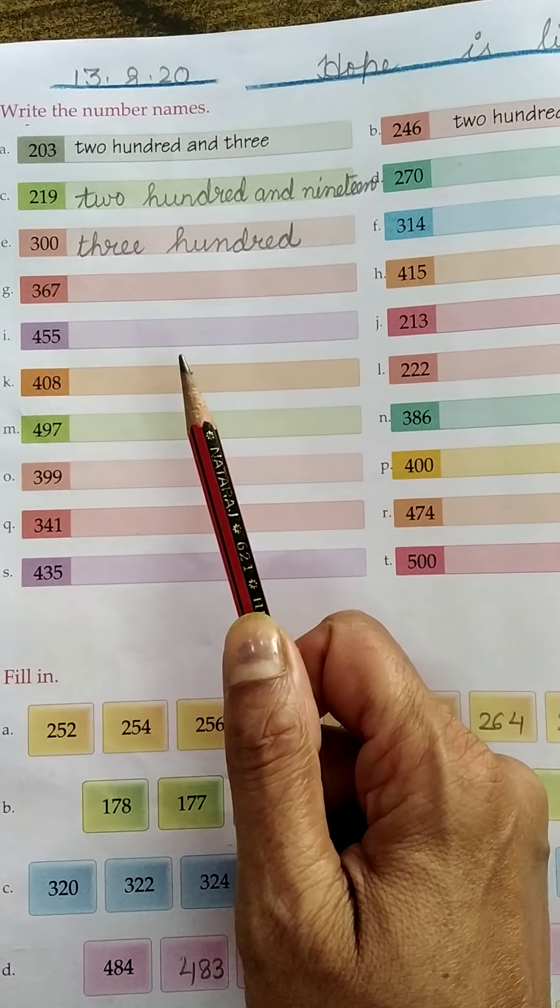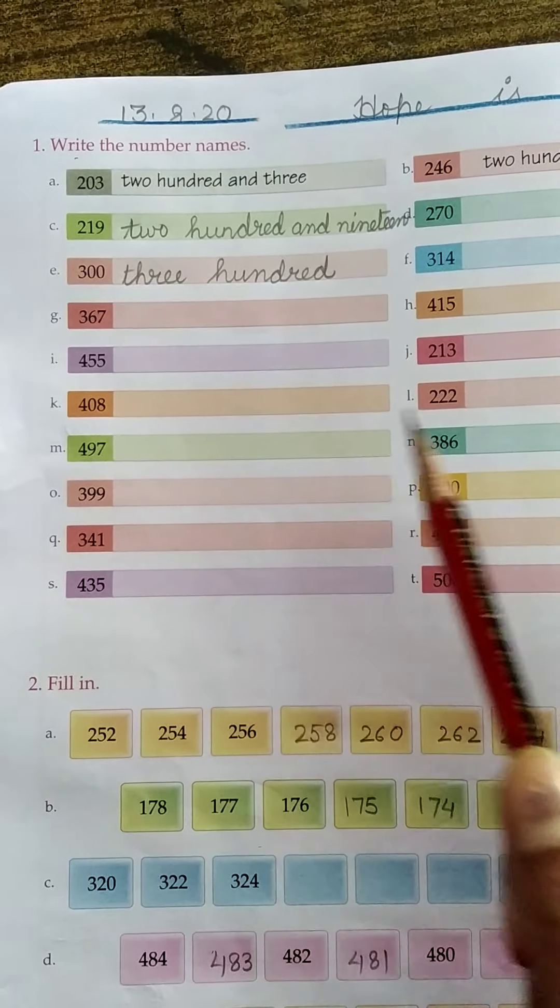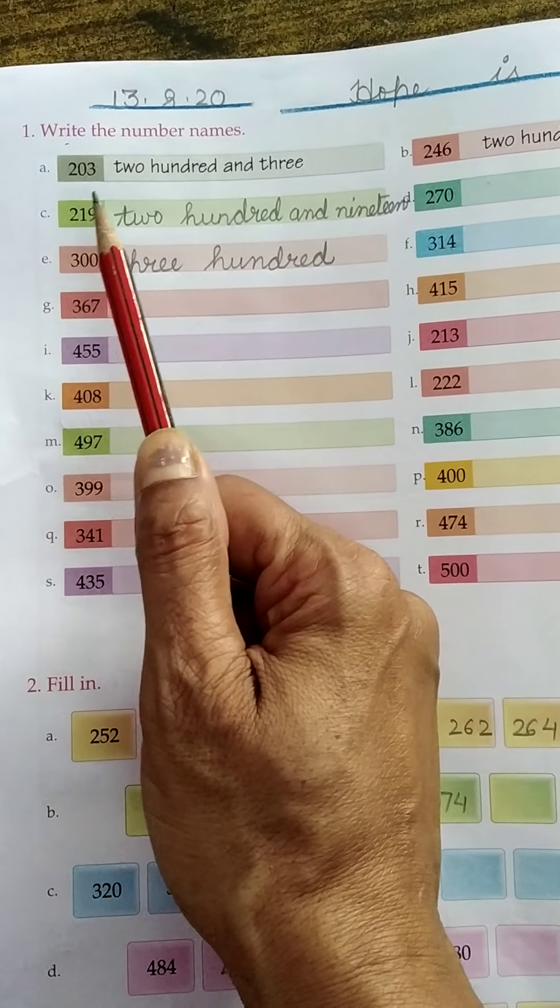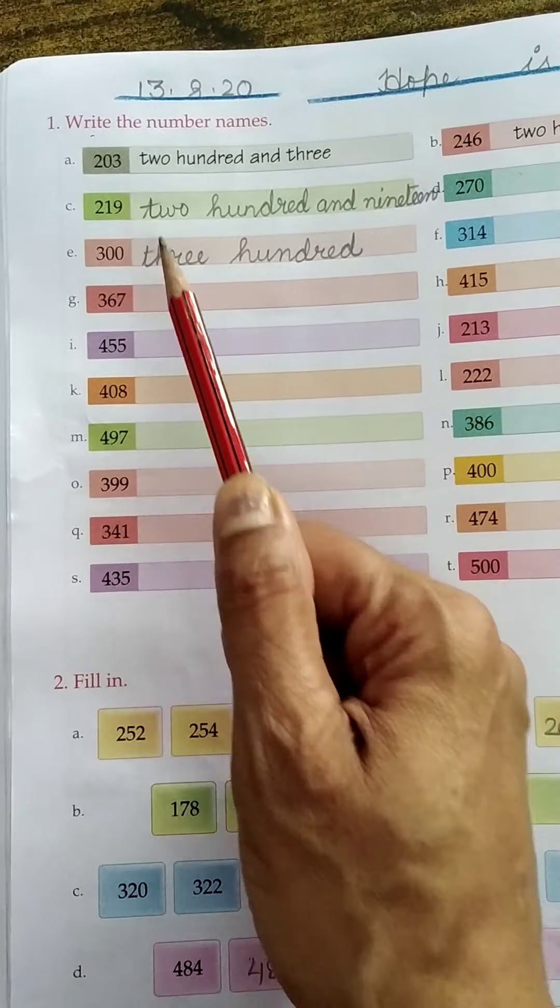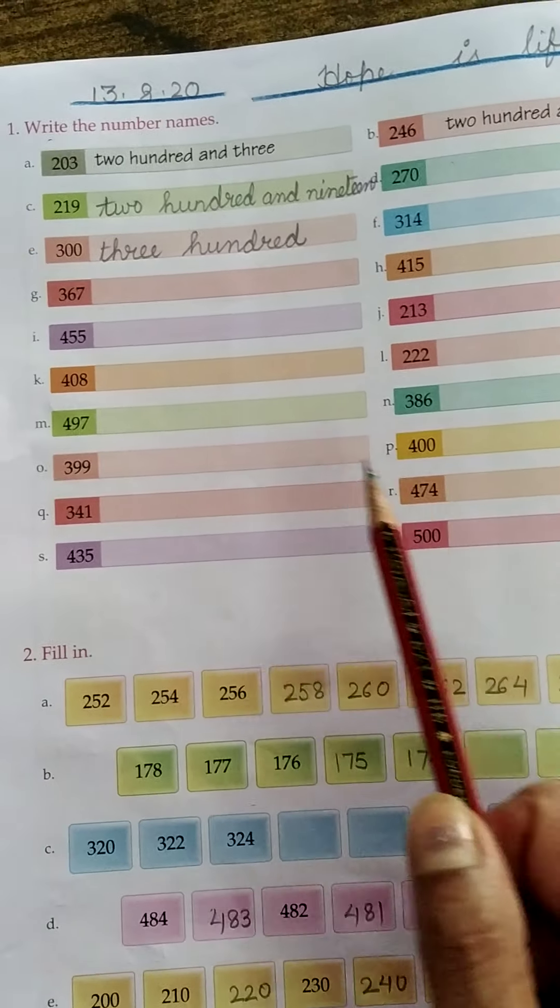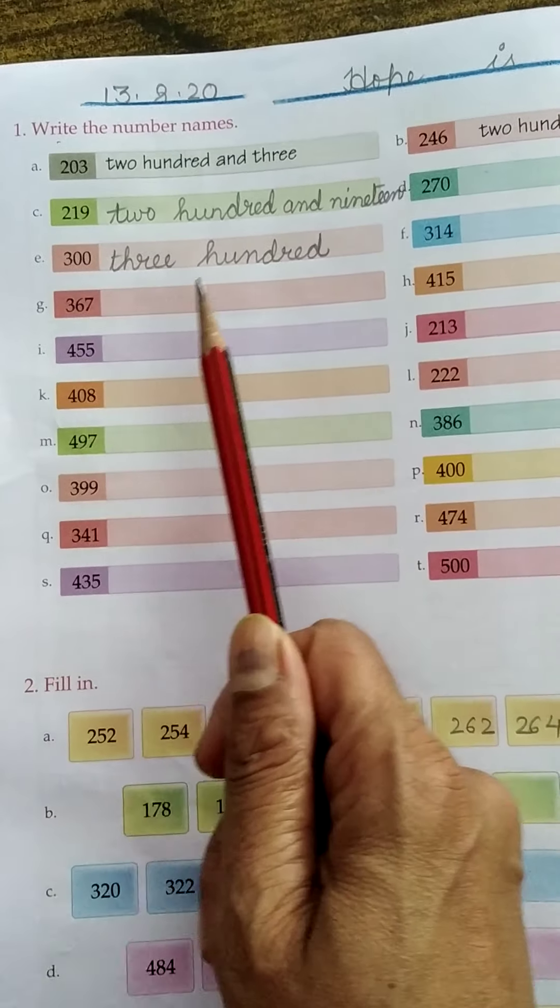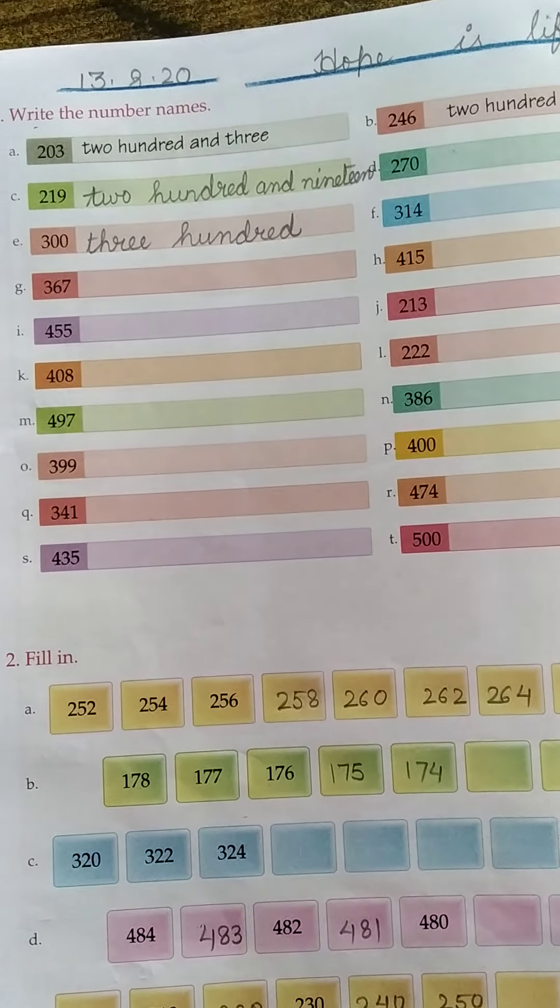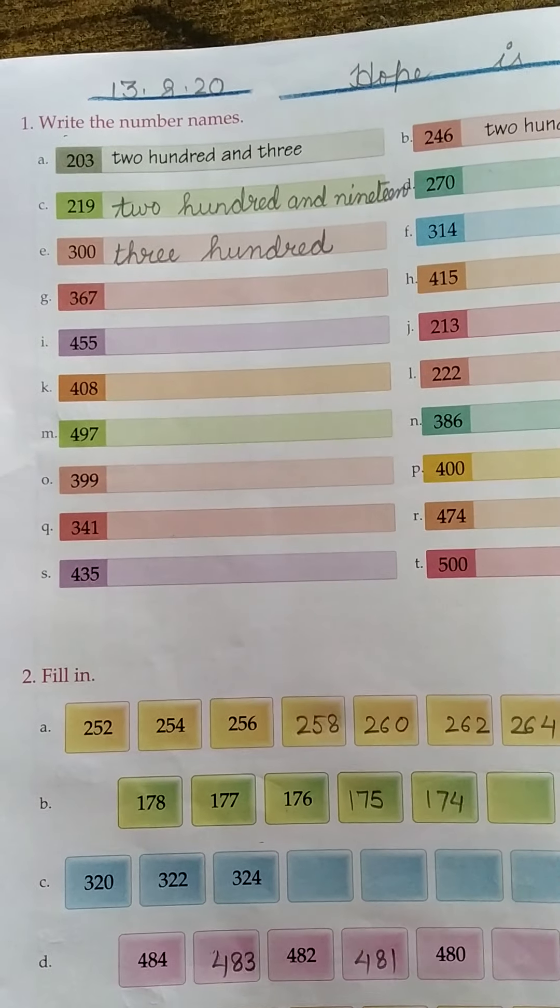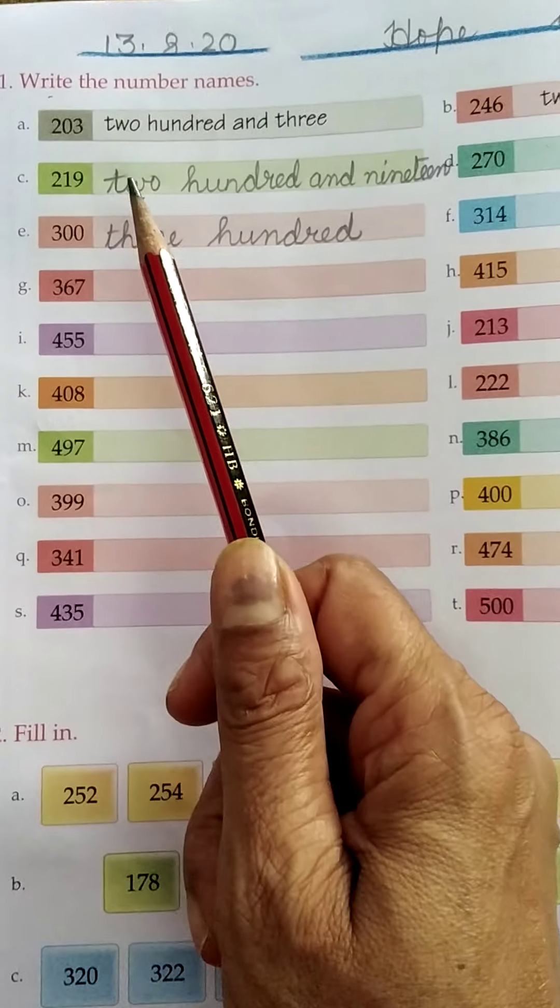In the previous video, we have done the spelling of 100 up to 200. So in this chapter, you have to do the spellings of 200, 300, 400 up to 500. Everyone, you know the spelling of 3, 19. So if you remember all the spellings, the work is not difficult. You can write every spelling, every number name. So let's start.